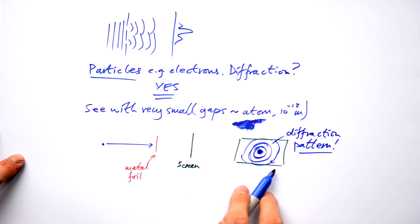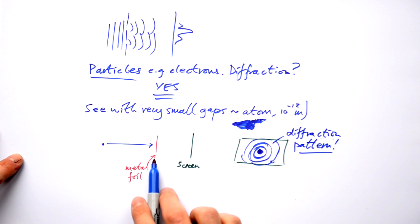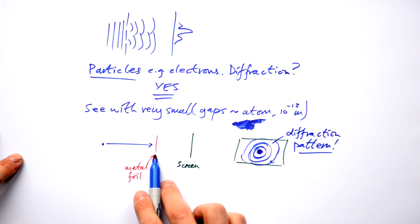If this is a phosphorescent screen then it will light up when electrons hit it. So we get a bright fringe, dark fringe, bright fringe, dark fringe, bright fringe, dark fringe, and a bright fringe. So just like with light going through a gap when electrons go through a metal foil, a very thin metal foil we actually see diffraction happening.